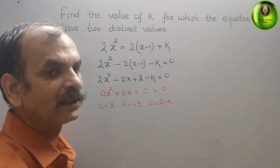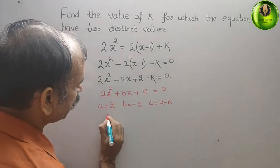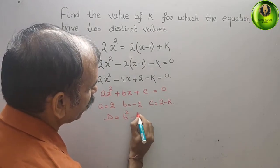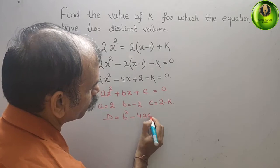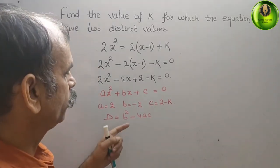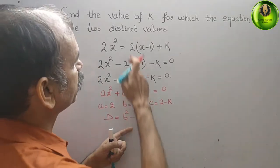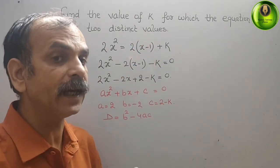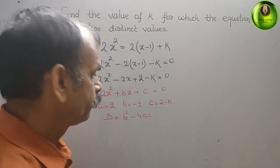Now we will go for the discriminant. The discriminant is nothing but b² - 4ac. Now what they have given: distinct values, that means it should be greater than 0.